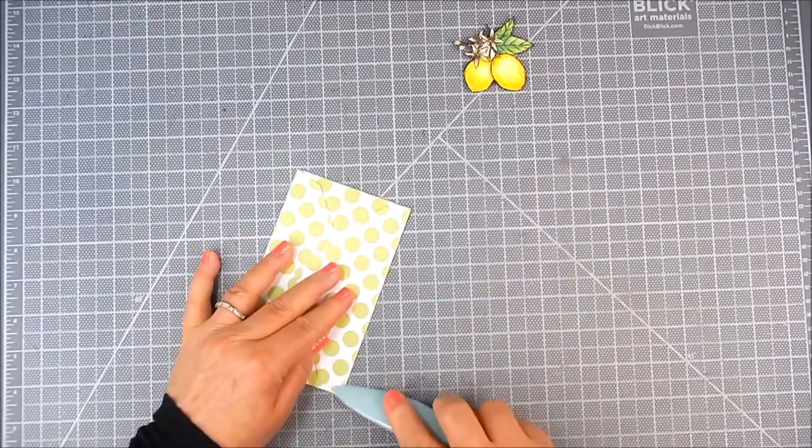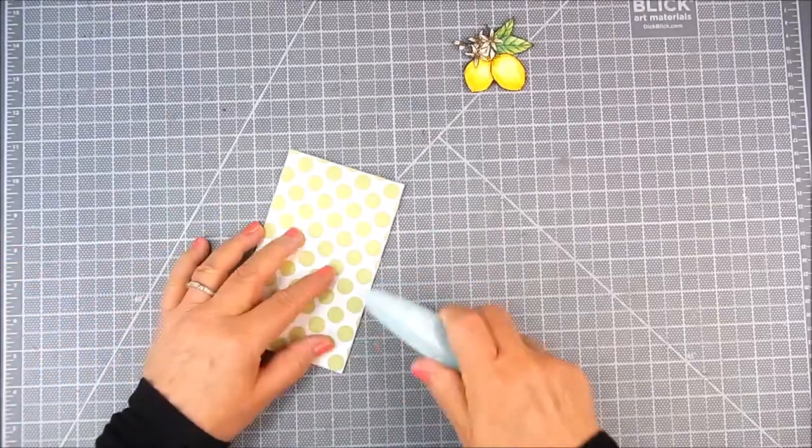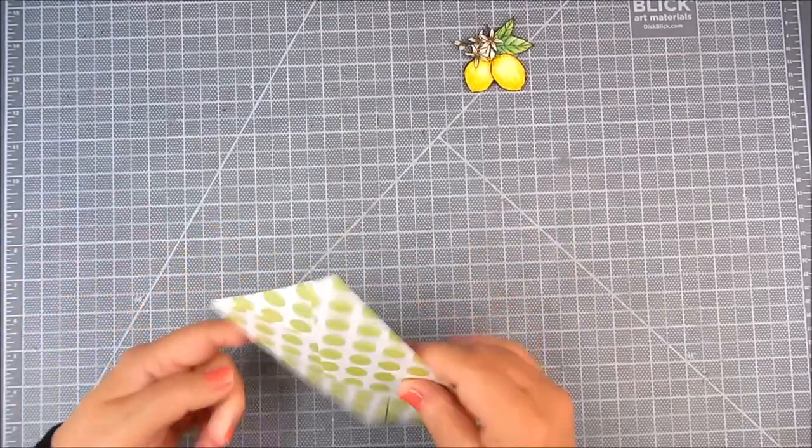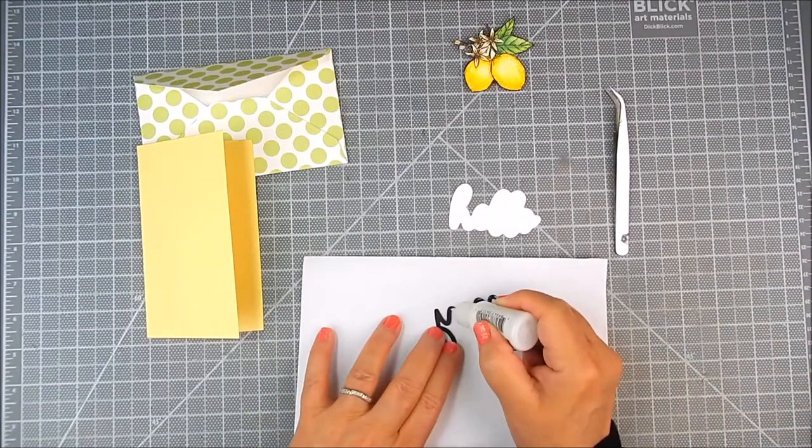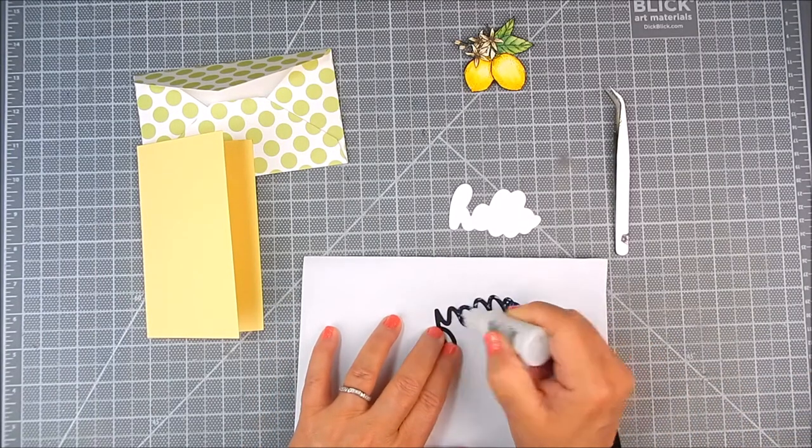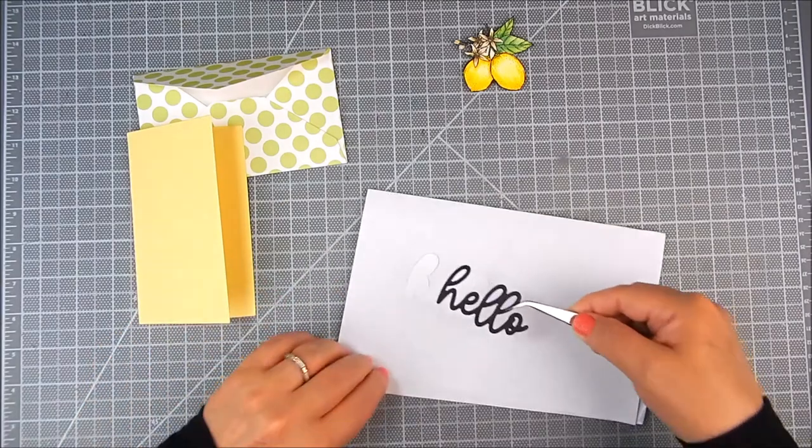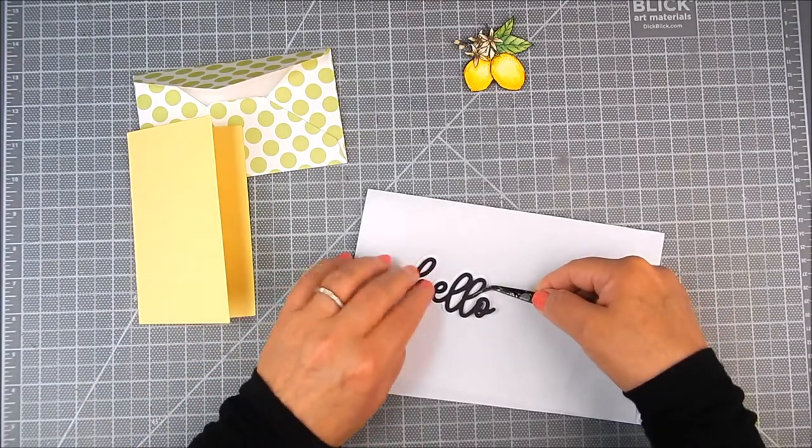And so the envelope is made in pieces. And I use score tape to adhere the pieces to make a little envelope. I used Unity paper for that. I love the polka dots. It coordinates with this yellow in the lemons. I love the yellow and green theme.